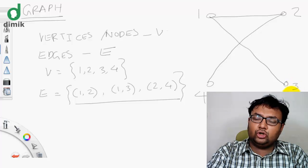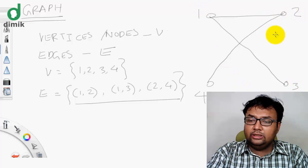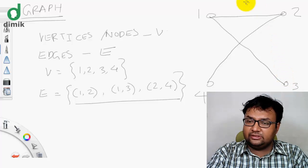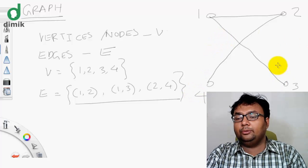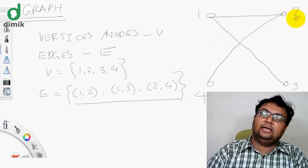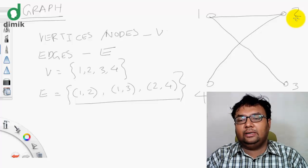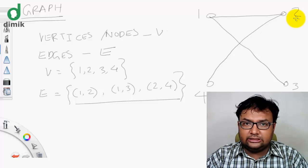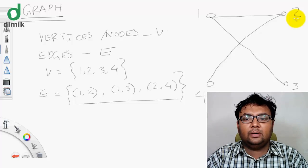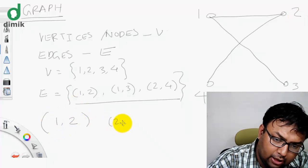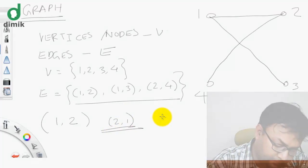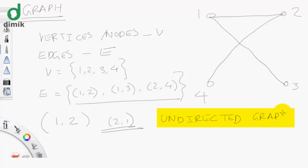For example, vertices 1, 2, 3, 4: 1 and 3 are connected, 2 and 4 are connected. If edge (1,2) exists and 1 is connected to 2, then 2 is also connected to 1. This is called an undirected graph — if the graph has edges with 2 directions, it is an undirected graph.